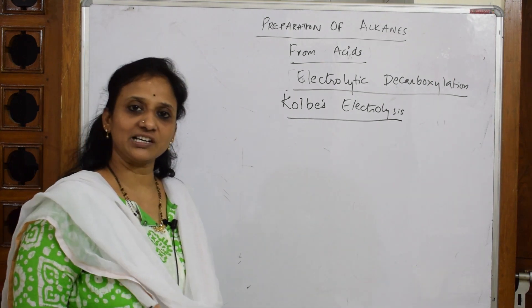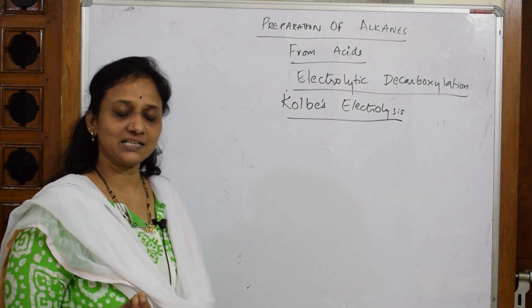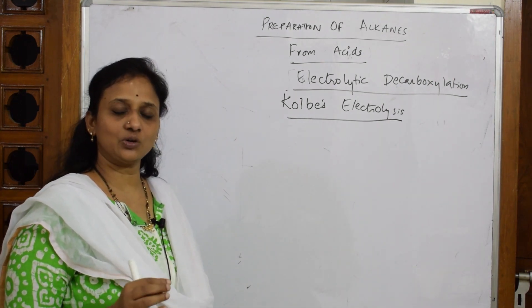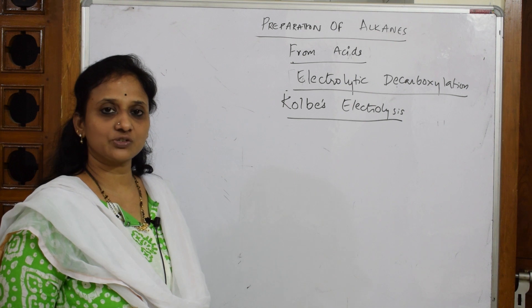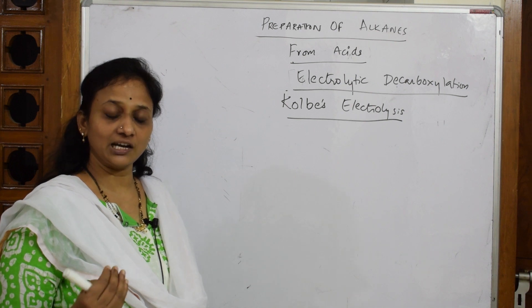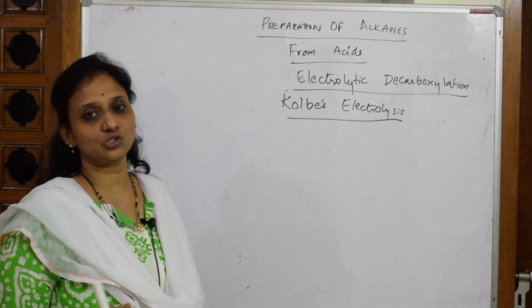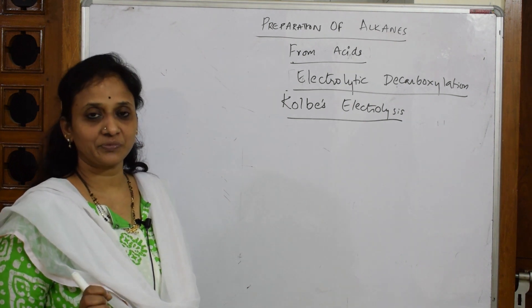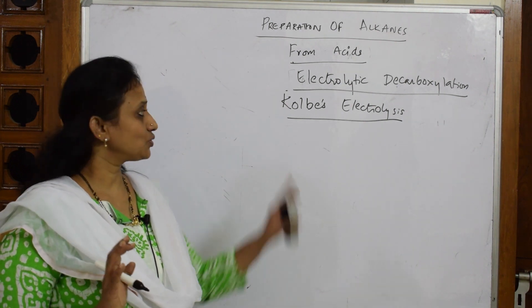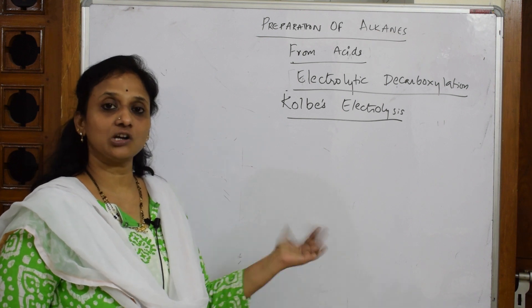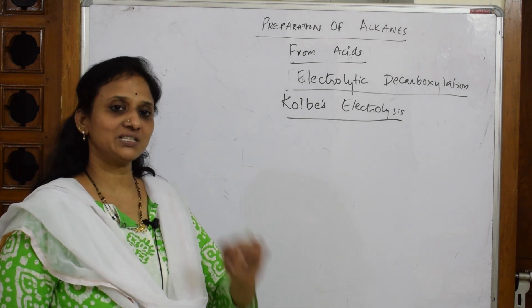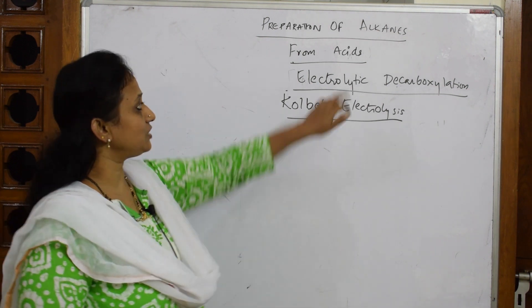Whenever we say electrolysis, that means you have an electrolytic cell in which you have an anode and a cathode — the electrodes — and an electrolytic solution as well. So in Kolbe's electrolysis process,